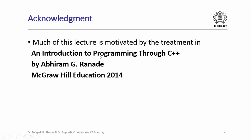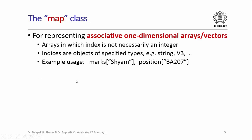Much of this lecture is motivated by the treatment in the book 'An Introduction to Programming through C++' by Abhiramji Ranadeh, published by McGraw-Hill Education in 2014. The map class as it comes in the C++ standard library is used for representing what are called associative one-dimensional arrays or vectors.